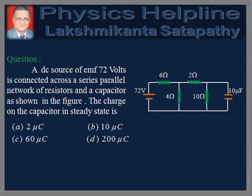A DC source of EMF 72 volts is connected across a series-parallel network of resistors and a capacitor as shown in the figure. The charge on the capacitor in steady state is: The options are 2 μC, 10 μC, 60 μC, and 200 μC.